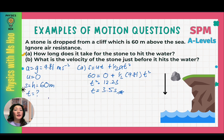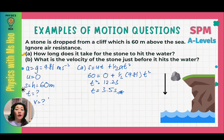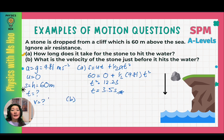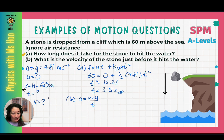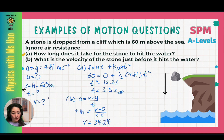(B) What is the velocity of the stone just before it hits the water? We're looking for v, and we have a, u, s, and t. Using a = (v − u)/t: 9.81 = (v − 0)/3.5, solving gives v = 34.34 m/s. Always go with the formula that gets you the answer most easily — the path of least resistance.